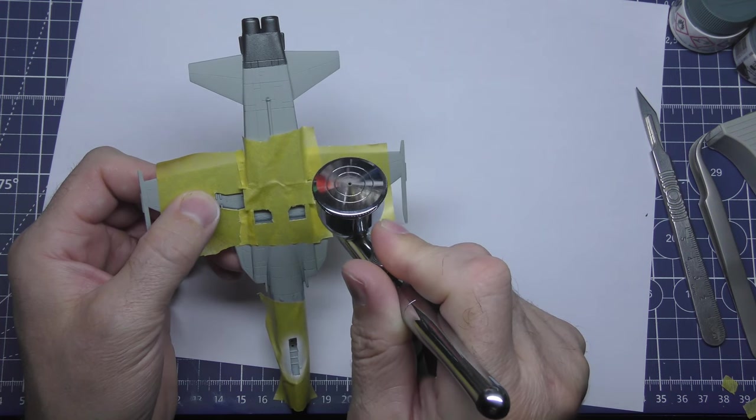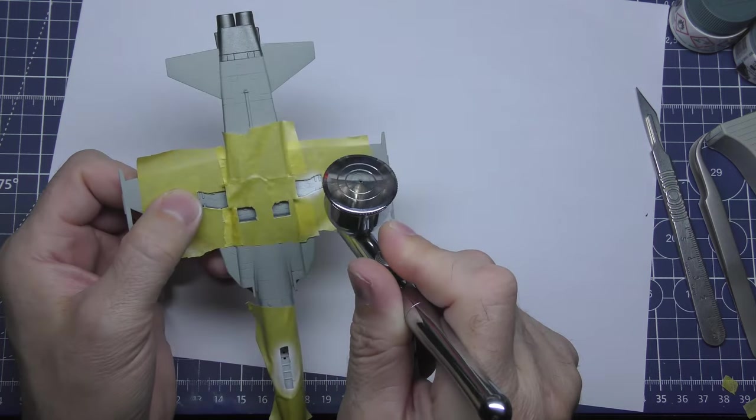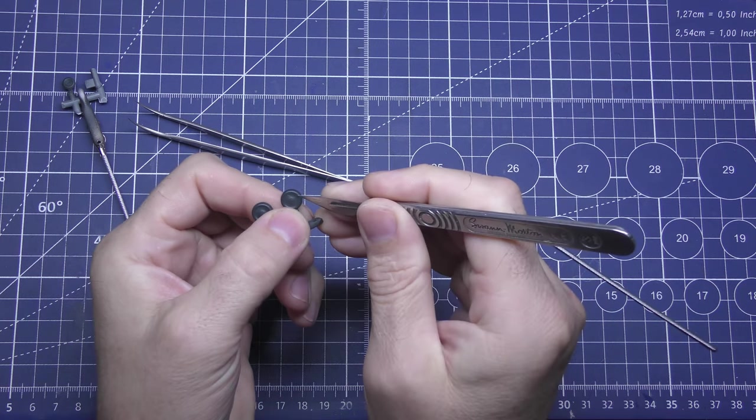And this is the white for the underside, for the undercarriage bays now. And like I say, I know it tells you it's meant to be silver, but I'm going to go with what photos I've got.